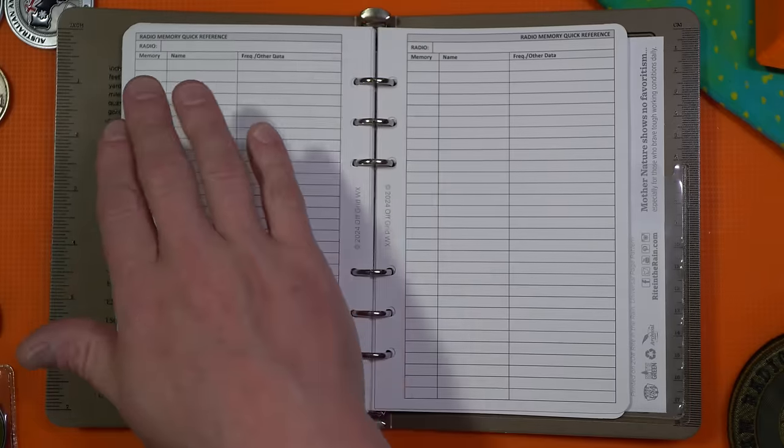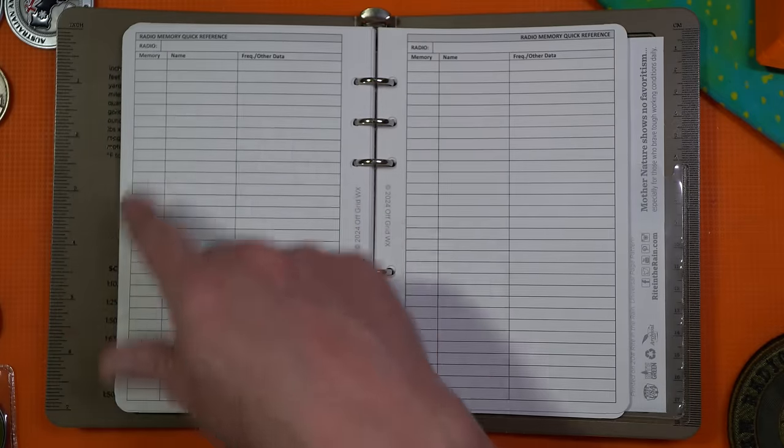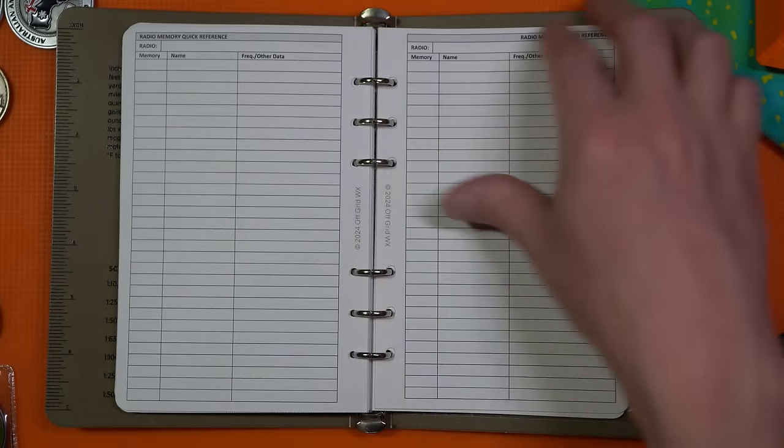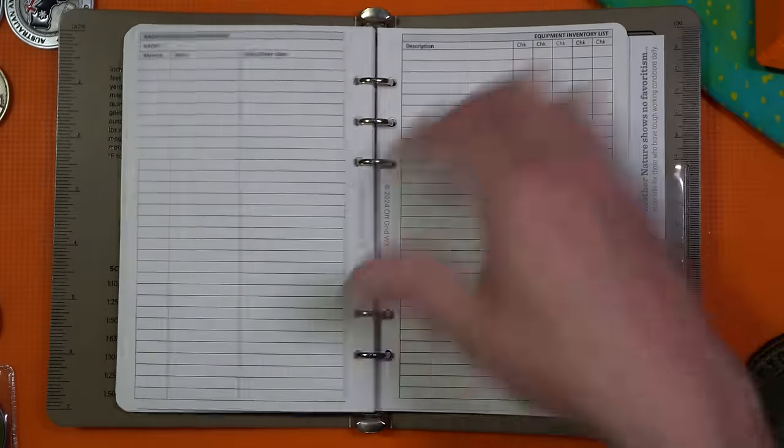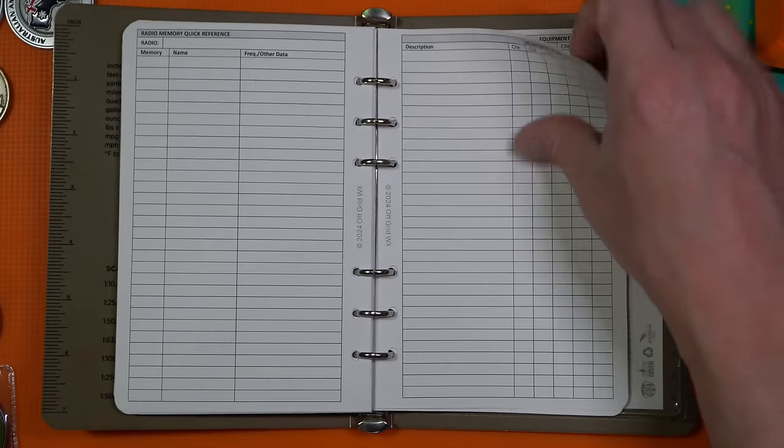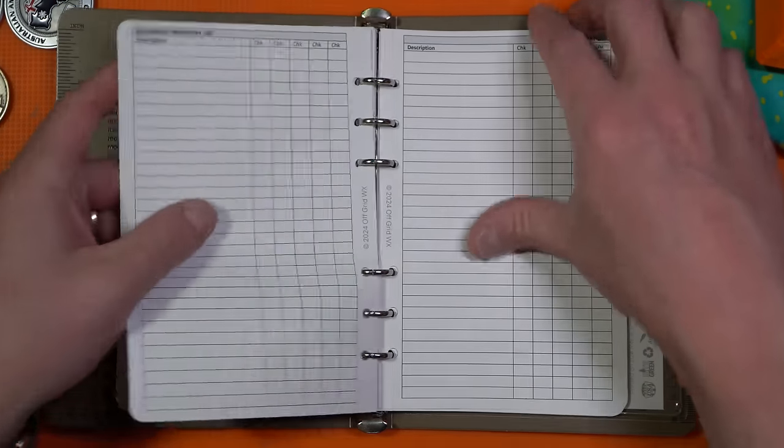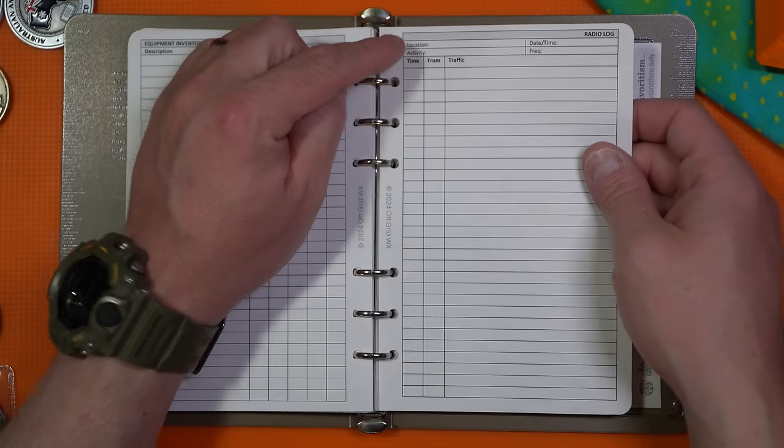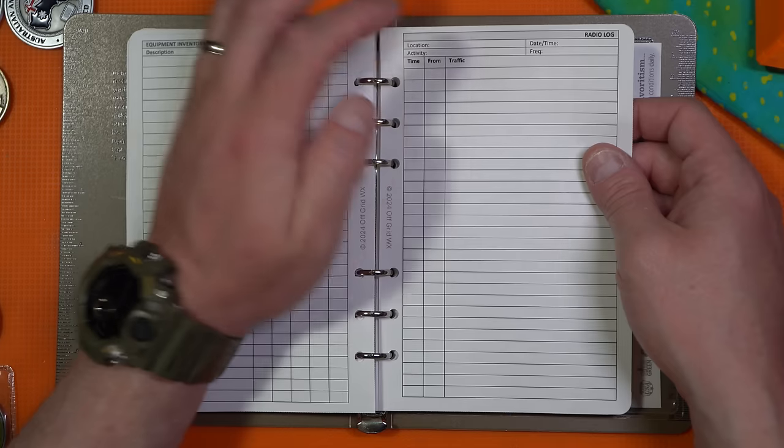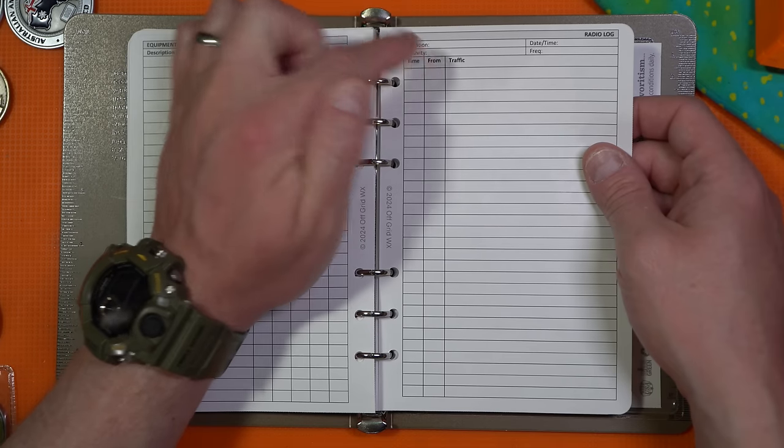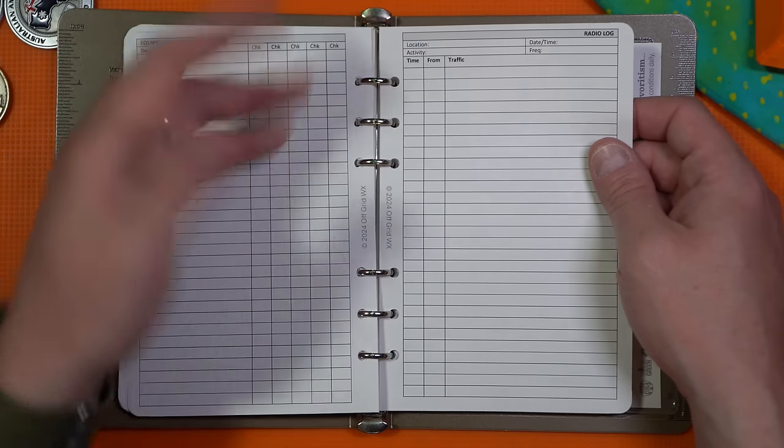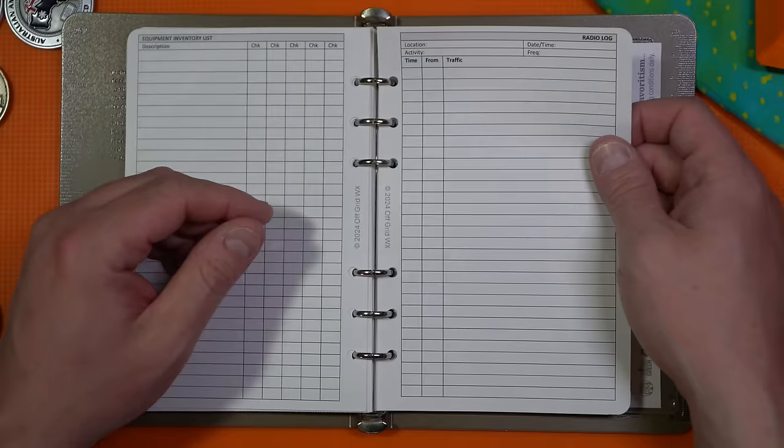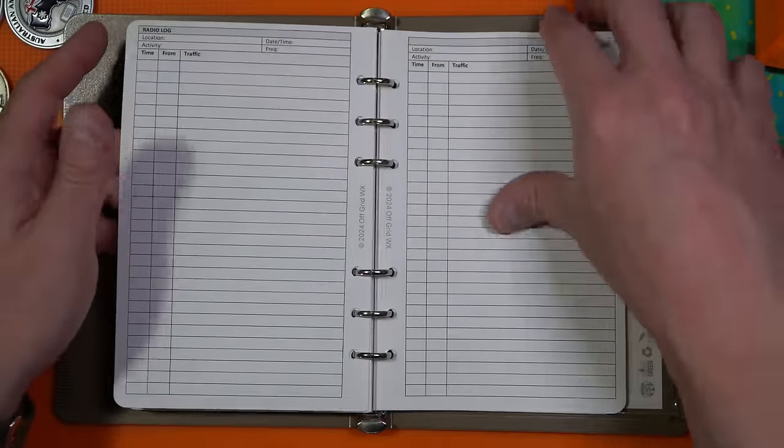And then of course, now you have your radio memory quick reference. So if you have a memory channel list, this is how you would identify that if you wanted to go that route equipment checklist, which is of course, why would you not have an equipment checklist? And then there you go, you got a radio log. So your location, your activity, date, time, frequency, time, your to, from, so your RST, and then you know who that person is. So call it their call sign as part of their traffic.